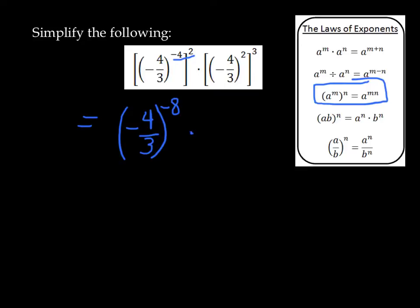In the second case, I'll have negative 4 thirds. And using the power of powers, 2 to the power of 3. So negative 4 thirds to the power of 2, all to the power of 3, gives me negative 4 thirds to the power of 2 times 3, which is 6.